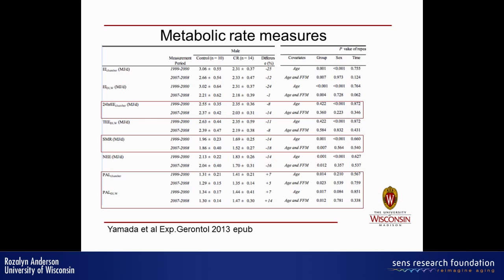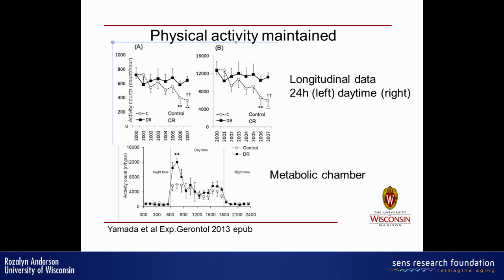Looking at differences between monkeys on control and CR from the Wisconsin study, considering all of them, male and females — all Wisconsin animals were adult age, between 14 years of age at onset. Looking at differences in fat mass and percent fat: 24-hour energy expenditure is not different between control and CR animals, in contrast to earlier reports. You can see two different time points from metabolic chamber analysis and doubly-labeled water analysis. What is different is the sleeping metabolic rate — it's lower in CR animals. So there's a metabolic difference in CR animals, and it's the basal metabolic rate.